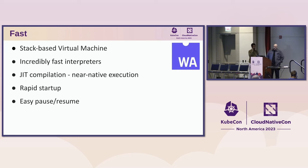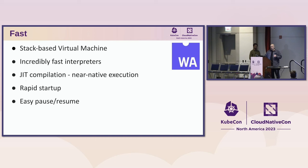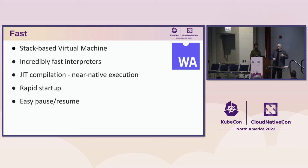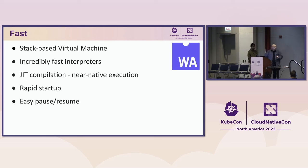WebAssembly is a stack-based virtual machine, which means it doesn't need to make as many stops while interpreting code. One of the additional side effects of the way this stack-based VM is written is that it can start executing at the top of the module while the back of the module is still streaming in. With WebAssembly you can start at the first instruction and move forward while still streaming the rest of the file — that's a really interesting way to optimize your startup speed.